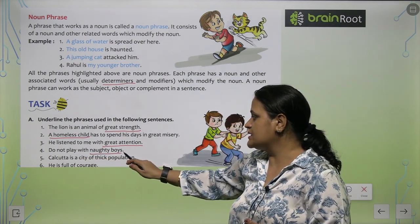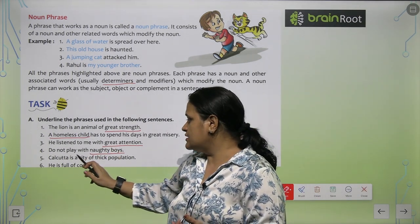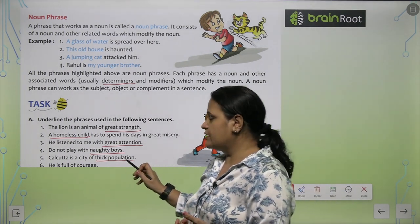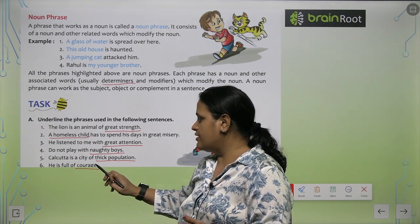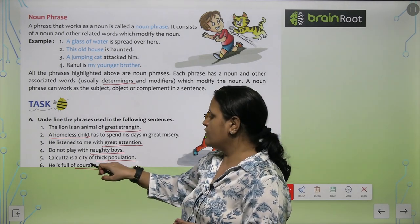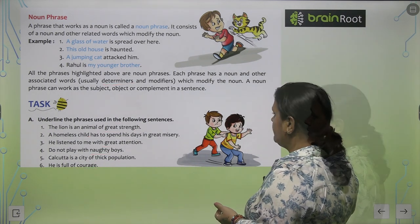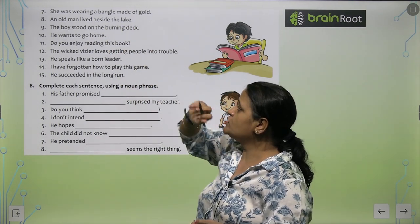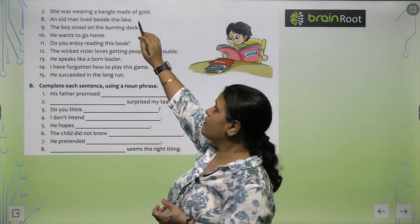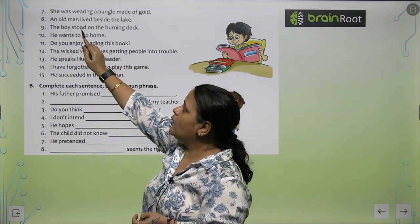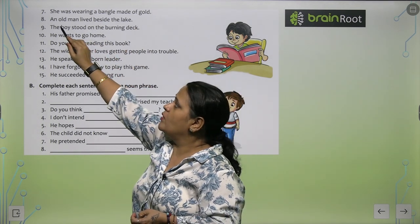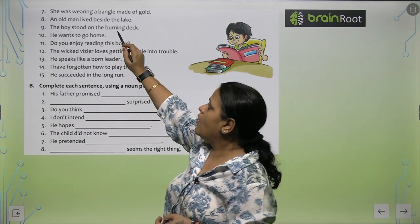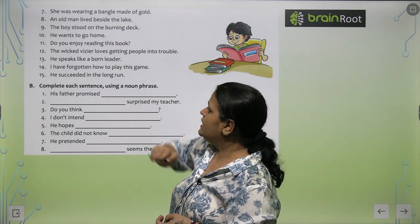'Do not play with naughty boys' — 'naughty boys' is an adjective phrase. 'Calcutta is a city of thick population' — this also comes in the category of adjective phrases. 'He is full of courage' — courage is the quality shown here. 'She was wearing a bangle made of gold' — 'made of gold' is the quality of the bangle, so it is an adjective phrase. 'An old man lived beside the lake' — 'an old man' is a noun phrase. 'The boy stood on the burning deck' — 'on the burning deck' is an adjective phrase. Like this, you can recognize noun phrases, adjective phrases, and adverb phrases.